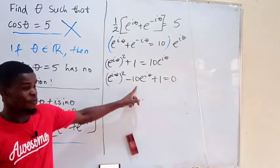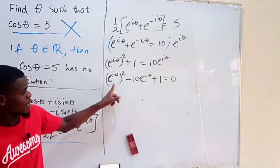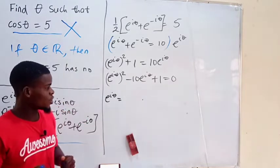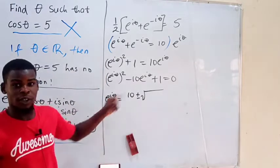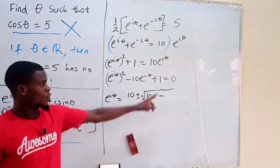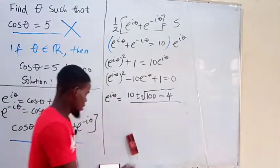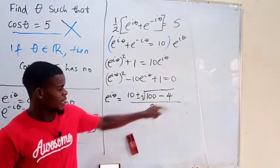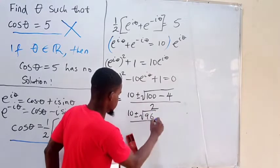Recalling that a equals 1 and b equals negative 10 — notice this is in quadratic form: x squared minus 10x plus 1 equals 0. Using the quadratic formula, negative b is 10, plus or minus the square root of b squared, which is 100, minus 4ac — where c is 1 and a is 1, so just minus 4 — all divided by 2 times a, which gives us 2. That gives us 96 inside the radical. So we have 10 plus or minus the square root of 96, all over 2.